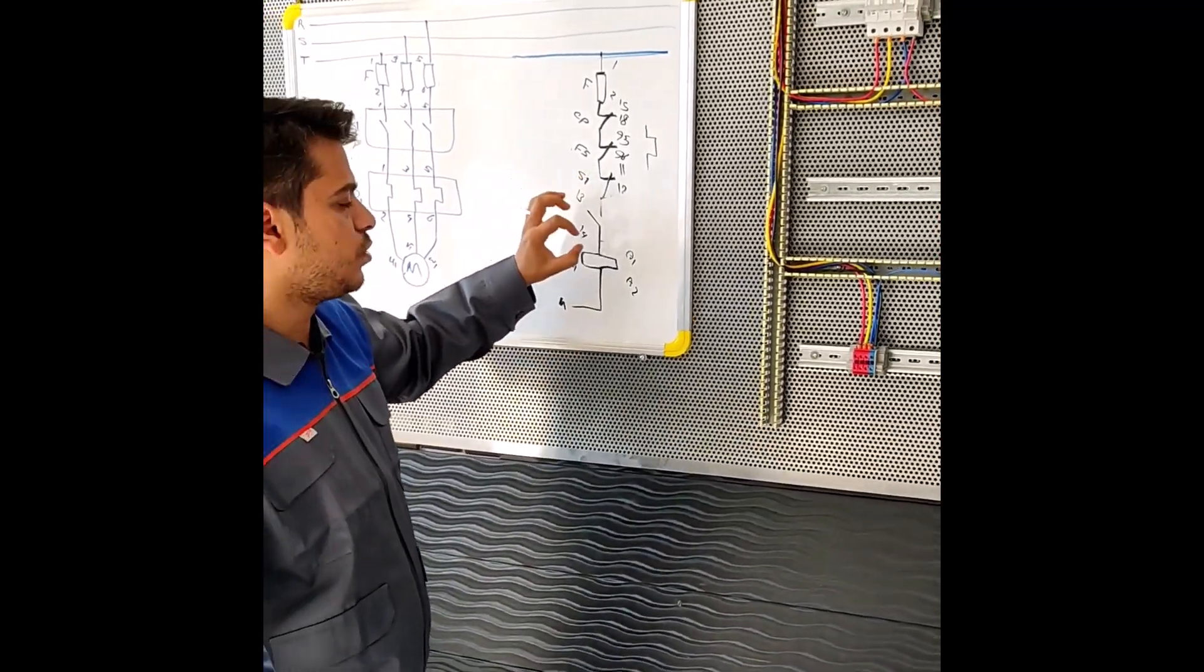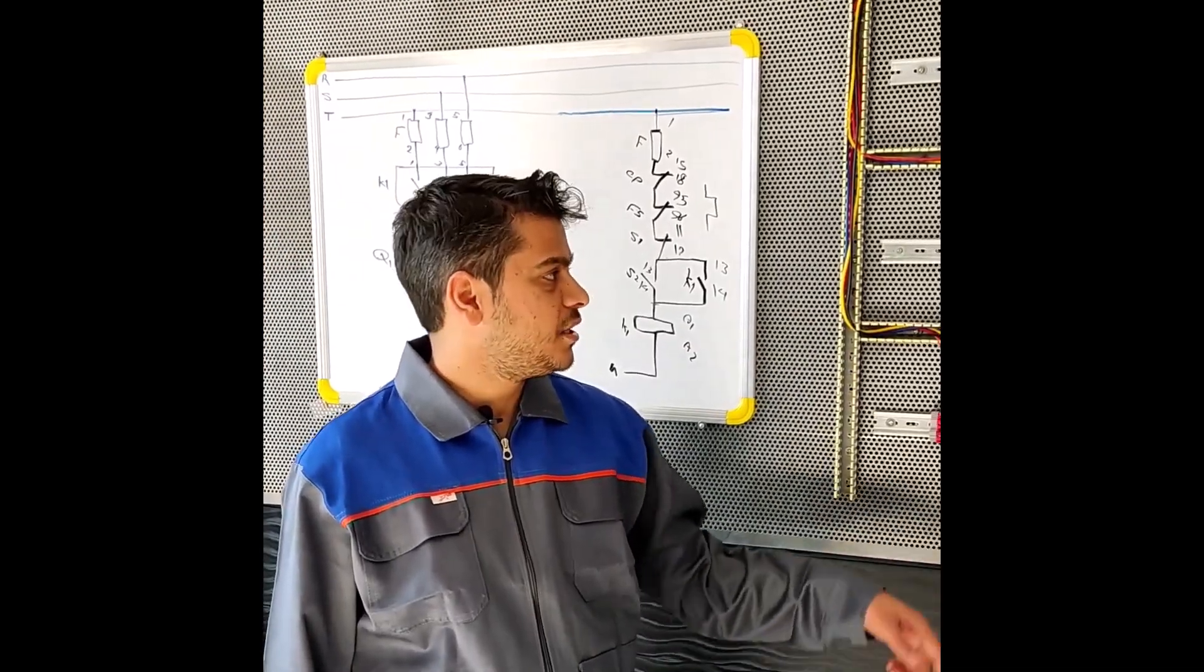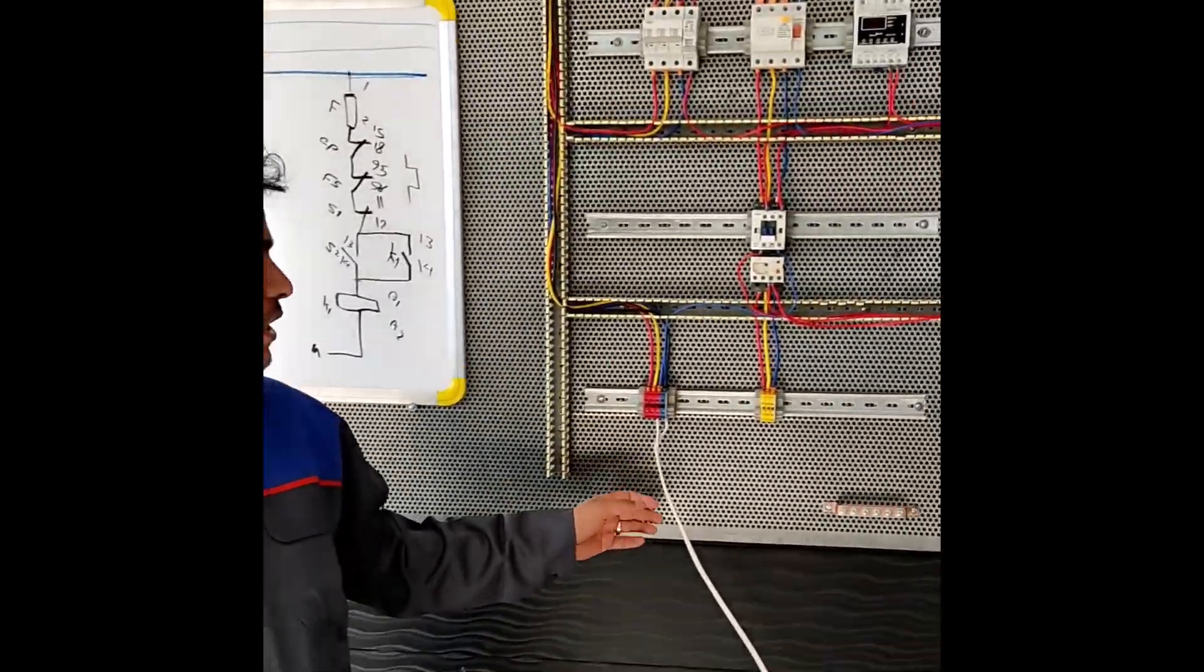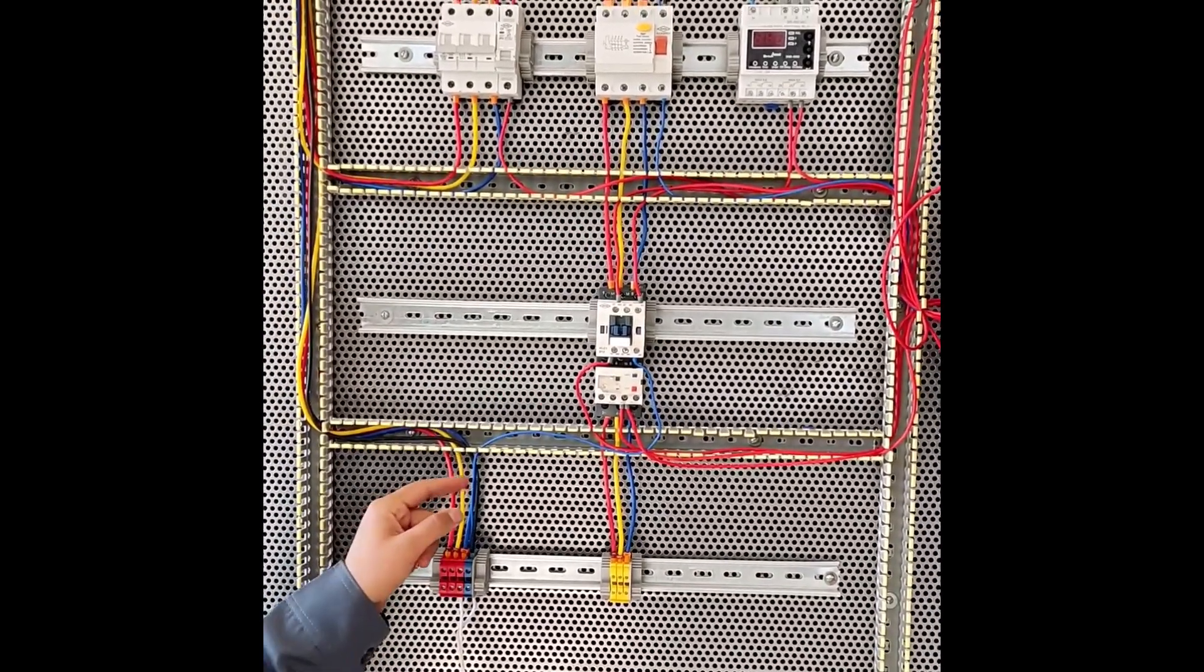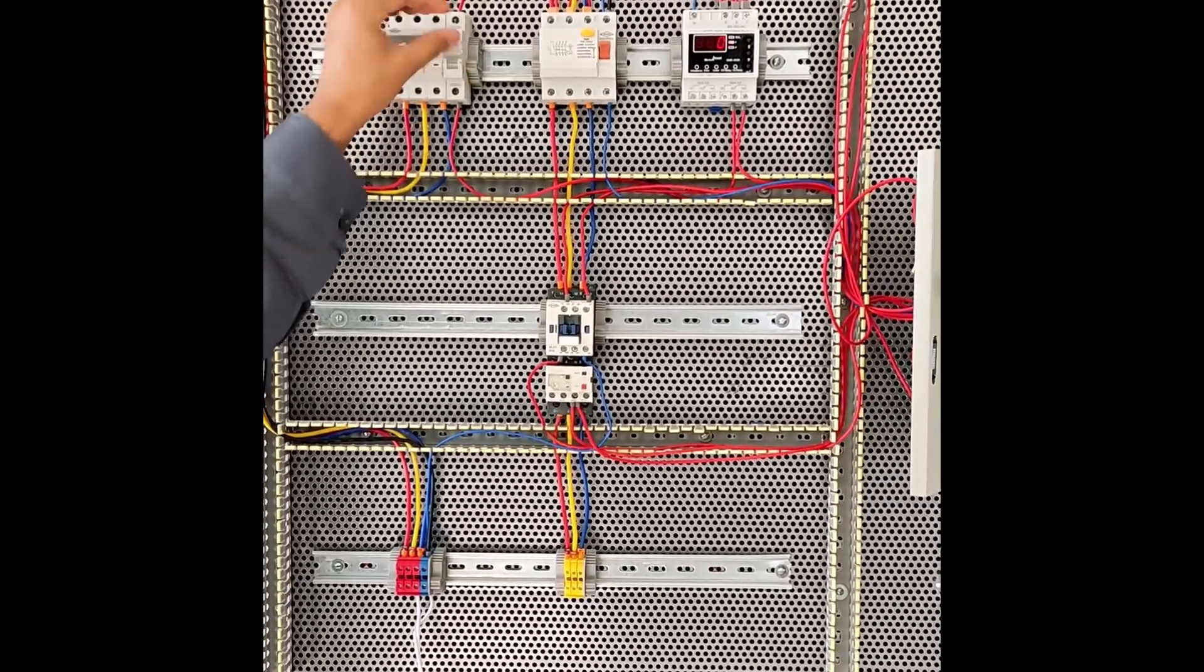If you add this section, it will be started permanently. Well, now we want to test this circuit. We electrify this steering circuit and connect the power circuit in the command circuit.